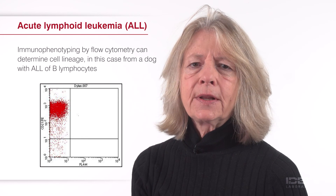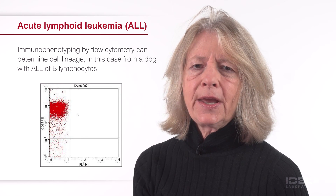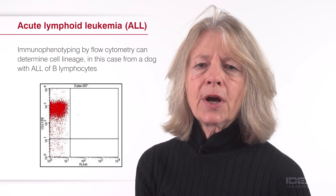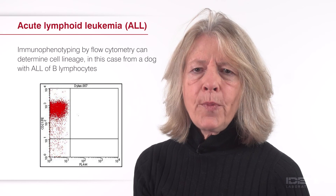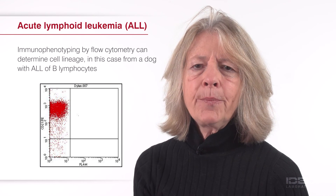Whether B or T cell lineage is clinically relevant in dogs and cats with ALL is unclear. The prognosis for dogs and cats with ALL is poor. Some dogs with lymphoma have numerous circulating neoplastic cells that may resemble the neoplastic lymphocytes in dogs with ALL. The distinction between circulating neoplastic cells from lymphoma and ALL may be important for prognosis and treatment. The neoplastic cells from dogs with lymphoma typically do not express CD34, whereas the neoplastic cells from dogs with ALL often do express CD34.